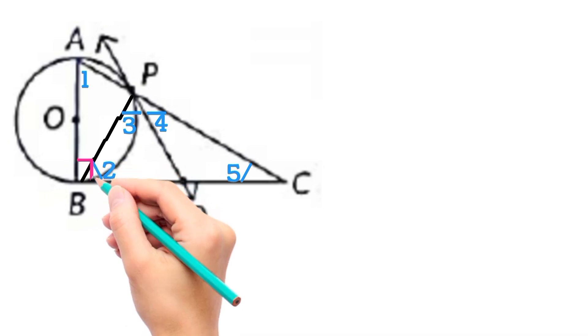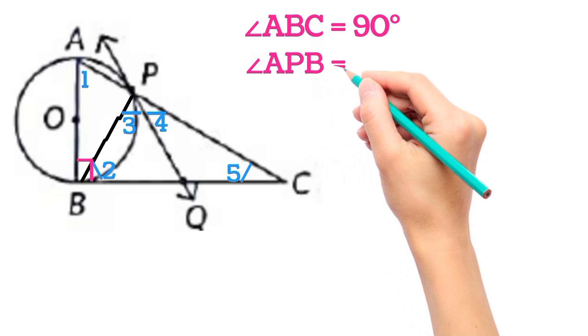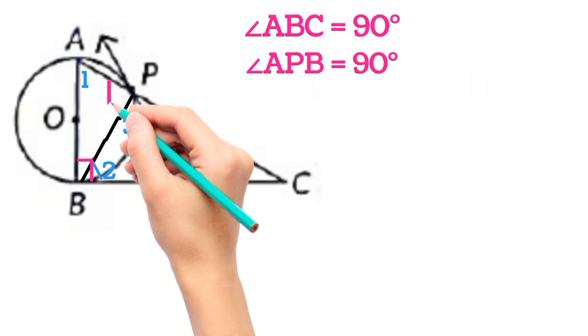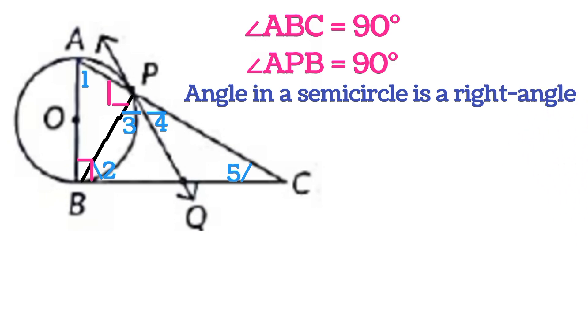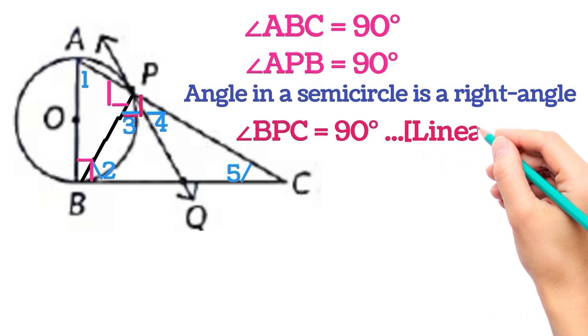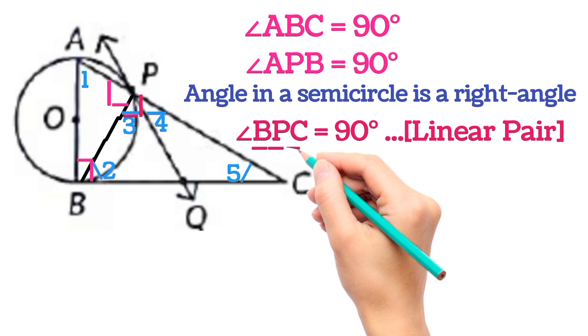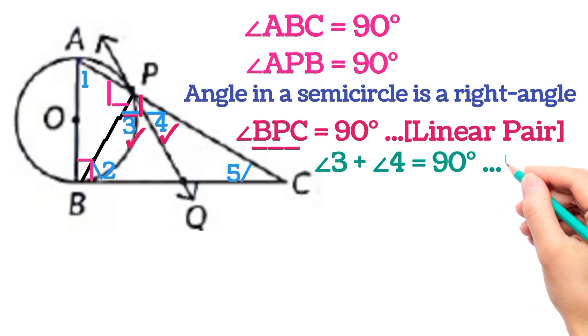This angle is 90 degrees, that is angle ABC is 90 degrees, and angle APB will also be 90 degrees because it is the angle in the semicircle. Now this angle will also be 90 degrees, that is angle BPC is 90 because both are the linear pair. Now BPC can be written as angle 3 plus angle 4, so angle 3 plus angle 4 is equal to 90 degrees. This is equation number 1.